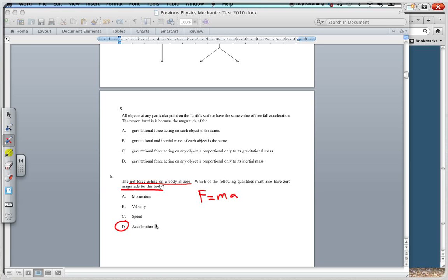Because the momentum, it could have a momentum, it could have a constant velocity. So it would have a momentum, velocity, speed. All of these, if these are constant, there is no unbalanced force acting on it. But it could certainly have an actual value for this. But if there is 0 net force, according to this formula, this is 0. Therefore, this must also be 0. The acceleration must be 0. So that would be D.